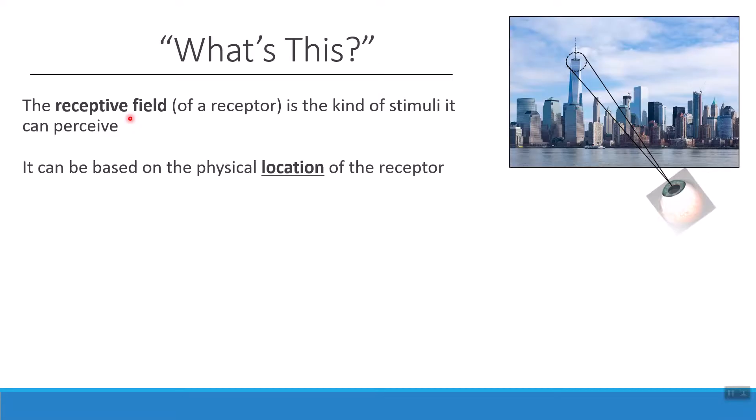Some of the receptive field is based on the physical location of the receptor in your body. For example, if I am visiting New York City and I'm looking out over the skyline, whatever is right in front of me in my field of view, what I can see is that. I can't see what's behind me. I can't see what's down and to the left. I can't see what's down and to the right. I see what's straight in front of the opening of my eye. That's my receptive field.